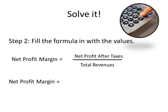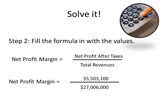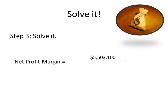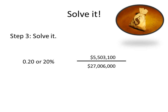The net profit margin in our case, based on our income statement, is equal to $5,503,100 divided by $27,006,000. We need only perform the basic division in order to get the answer, which is 0.20, or 20% in this case.